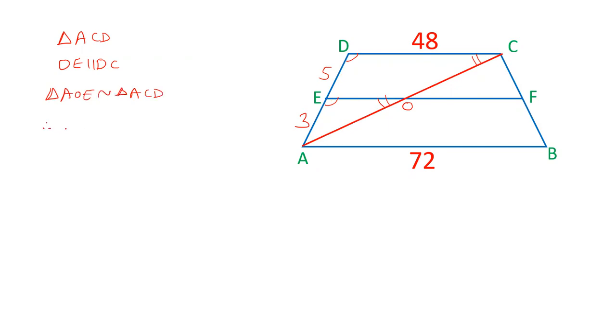Triangle AOE is similar to triangle ACD. Therefore, we can say that AE upon AD is equal to OE upon CD. Friends, at the end of the video, I will give you another direct approach in which we will not join any diagonal. Directly we will find out the value of EF. But for now, let's continue.